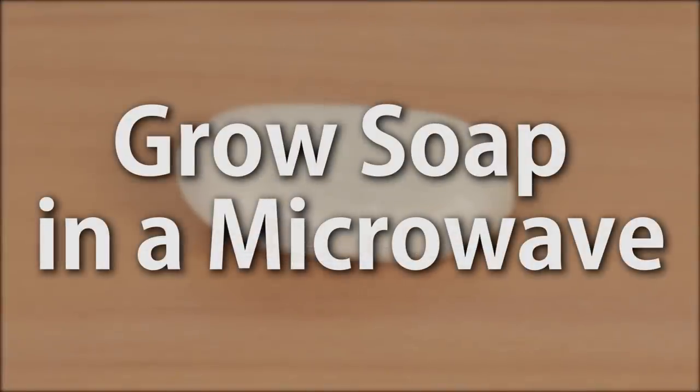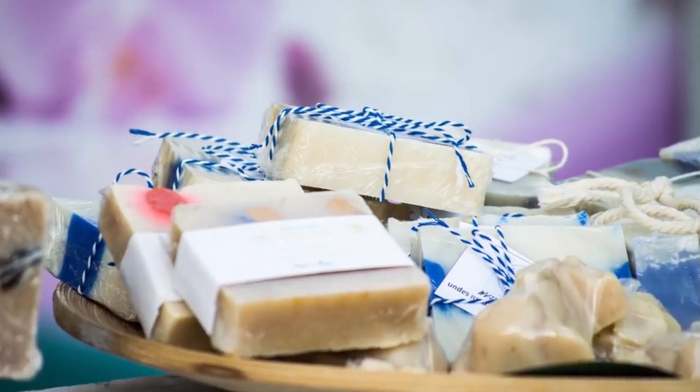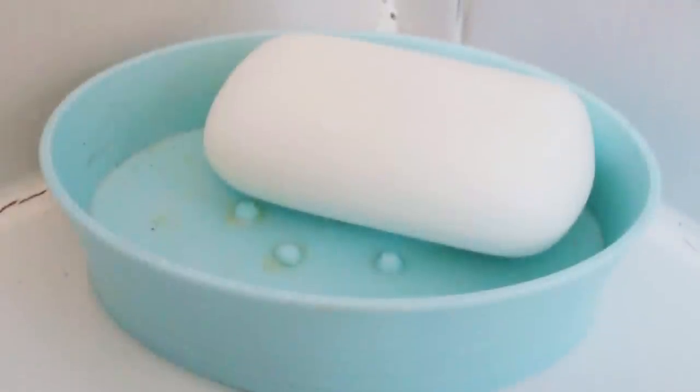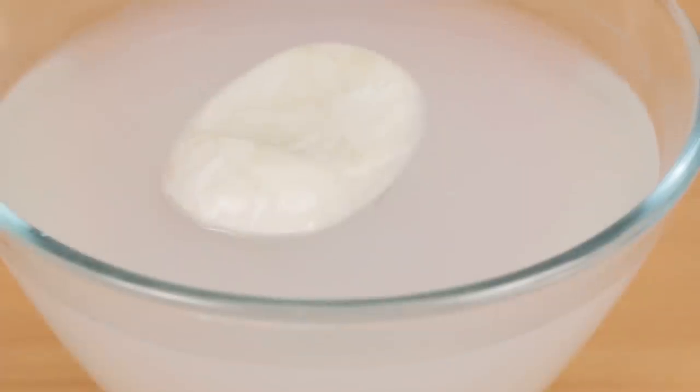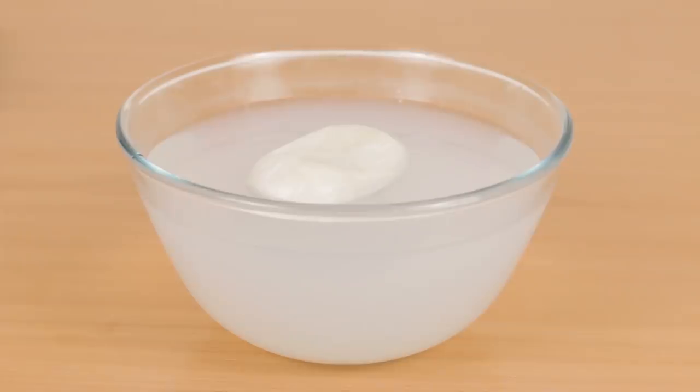Number seven, grow soap in a microwave. Soap comes in many shapes and sizes, with so many brands extending over decades since the modern bar form was created in the 1870s. Of all the different types of soap available, only a few float in water, including bars produced by the brand Ivory. Why does a solid object like soap float in water? It must be less dense than the water itself to do so.